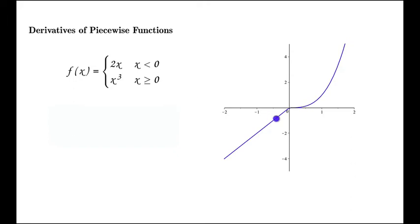Remember that derivative gives slope. So for x less than 0, the slope of this line is going to be 2. So we can say the derivative for x less than 0 is just going to be 2. The derivative of 2x is, of course, just 2.